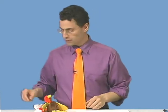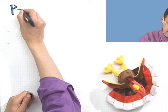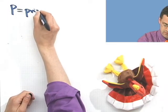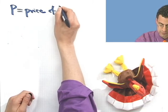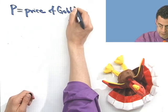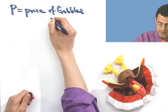How can we figure this out? Let's think about it together and see if we can reason together. We don't know how much the Beanie Baby cost a year ago — that's what we're trying to find out. But we do know how much it costs now. So let's let that unknown price be P. So P equals the price of Gobbles last year.